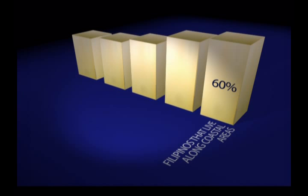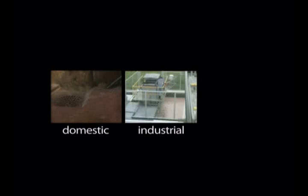Untreated domestic and industrial waste water is released instantly. Water pollution has three sources: domestic, industrial, and agricultural.